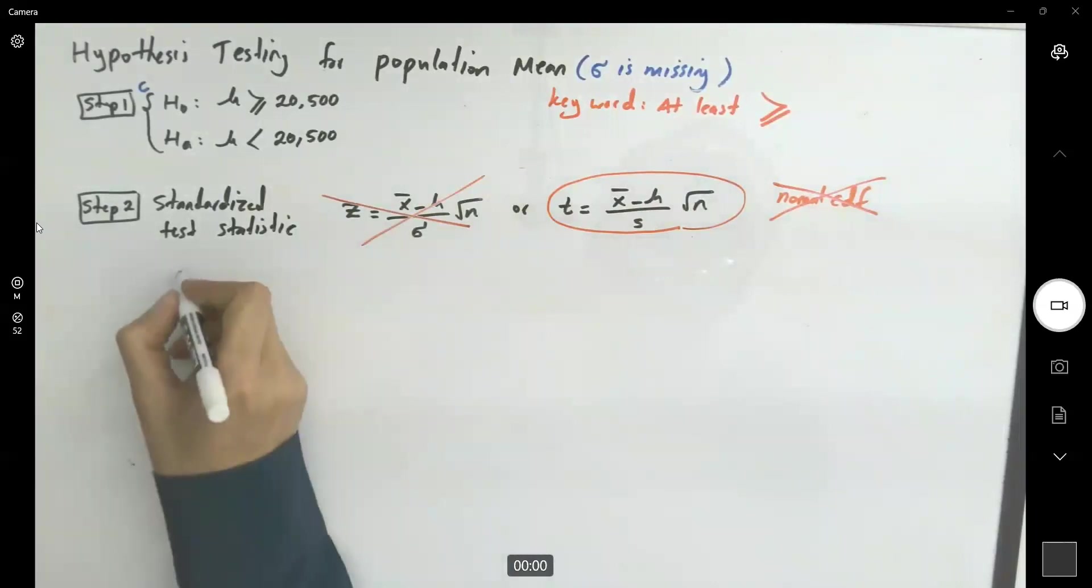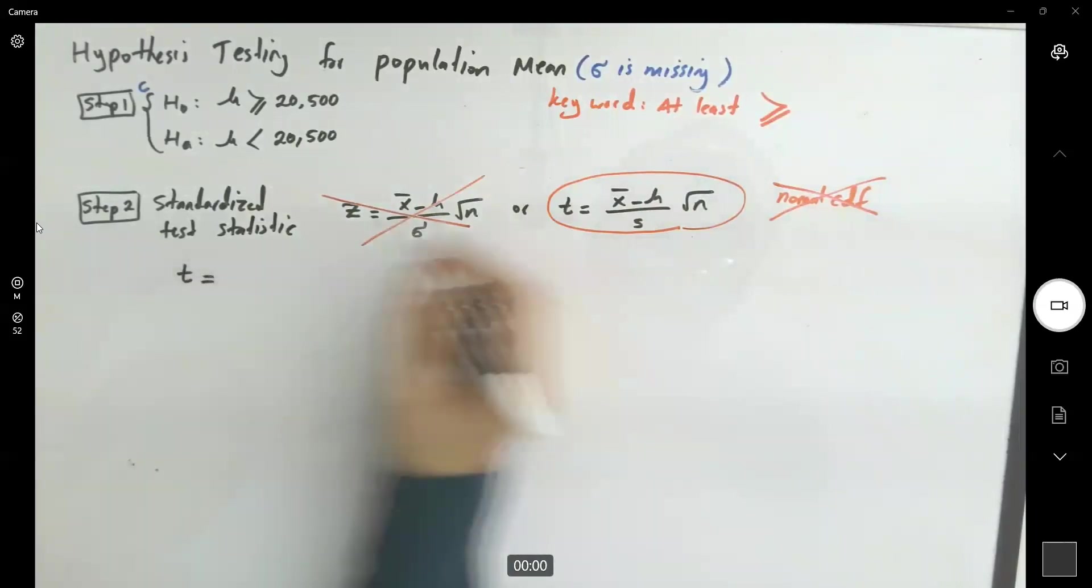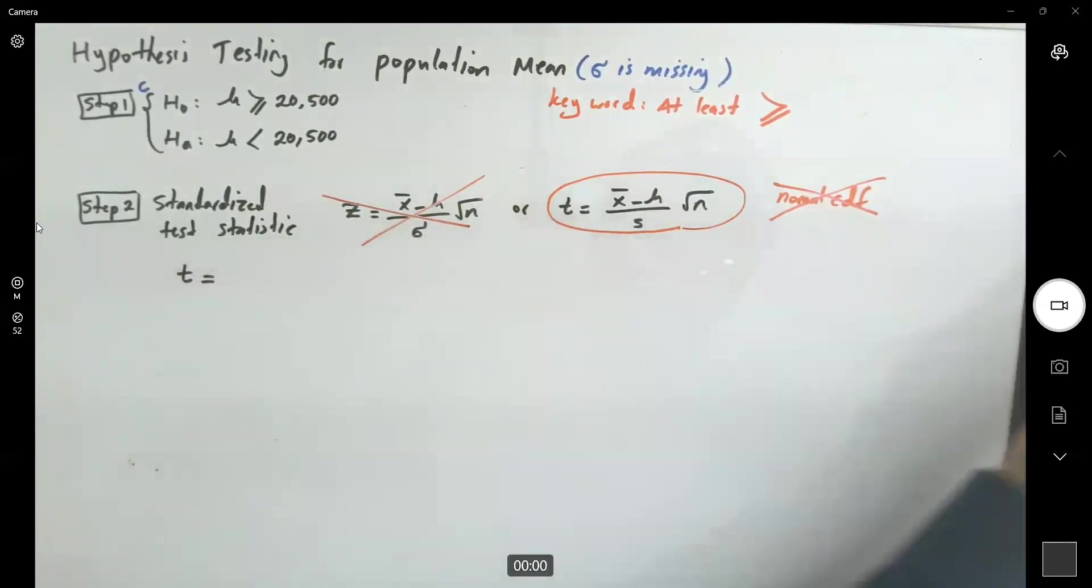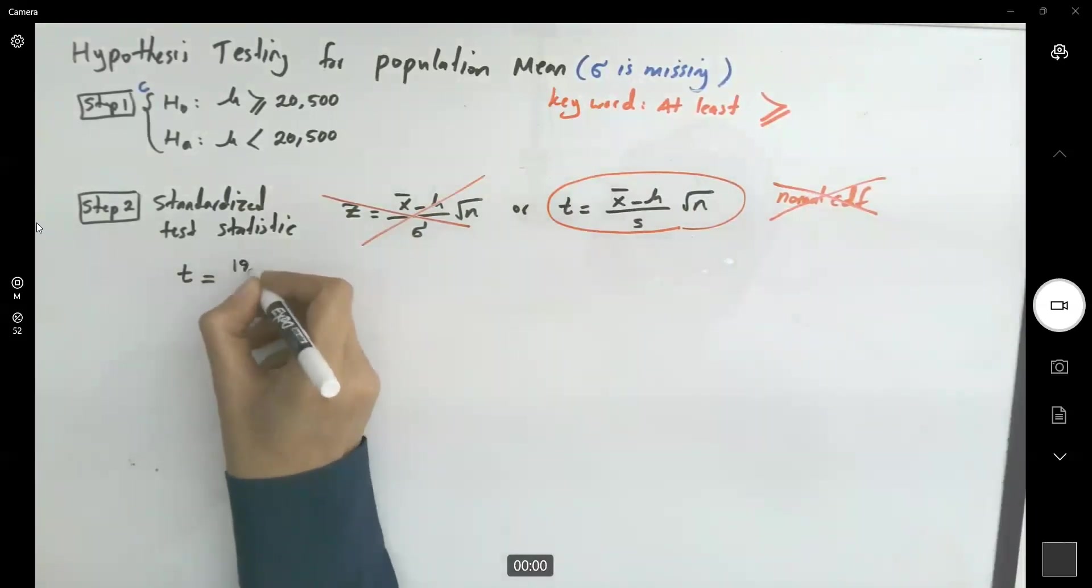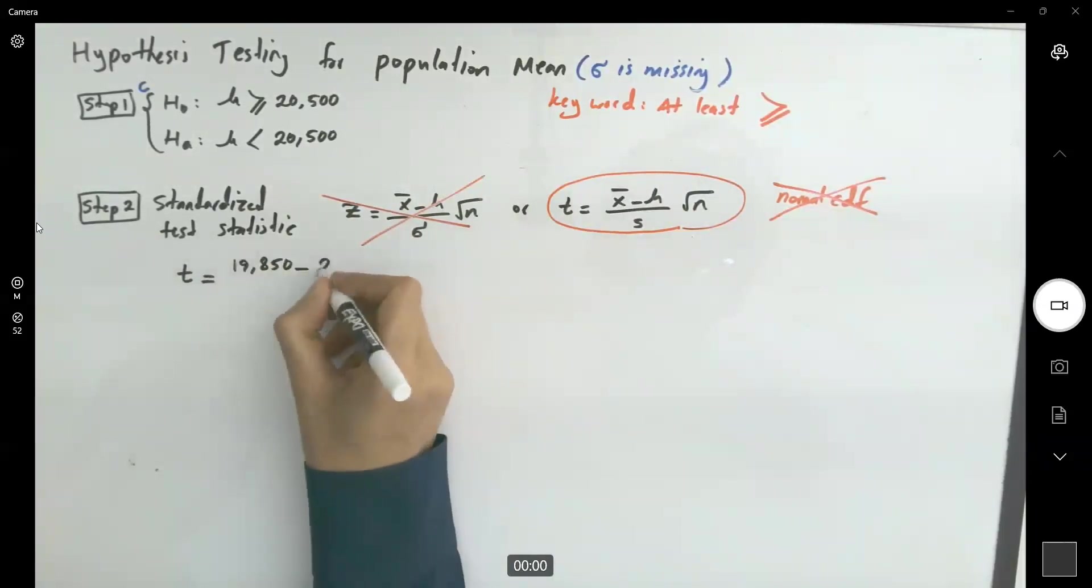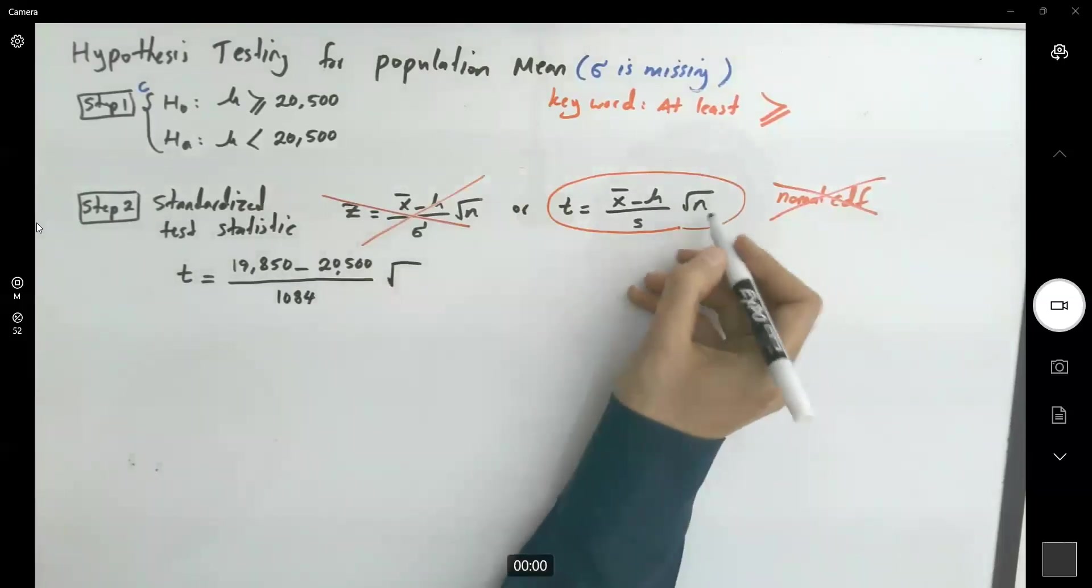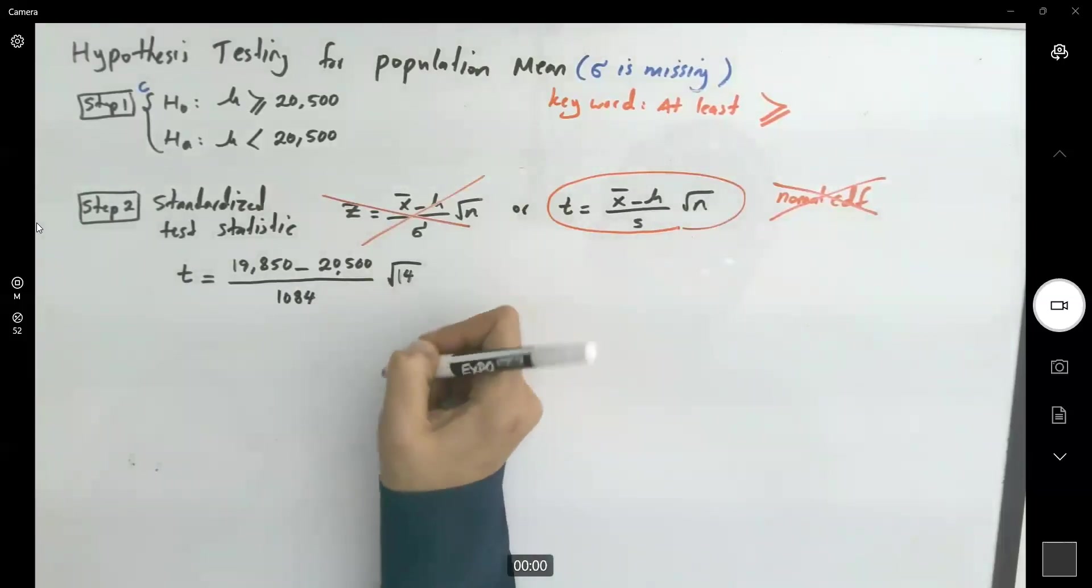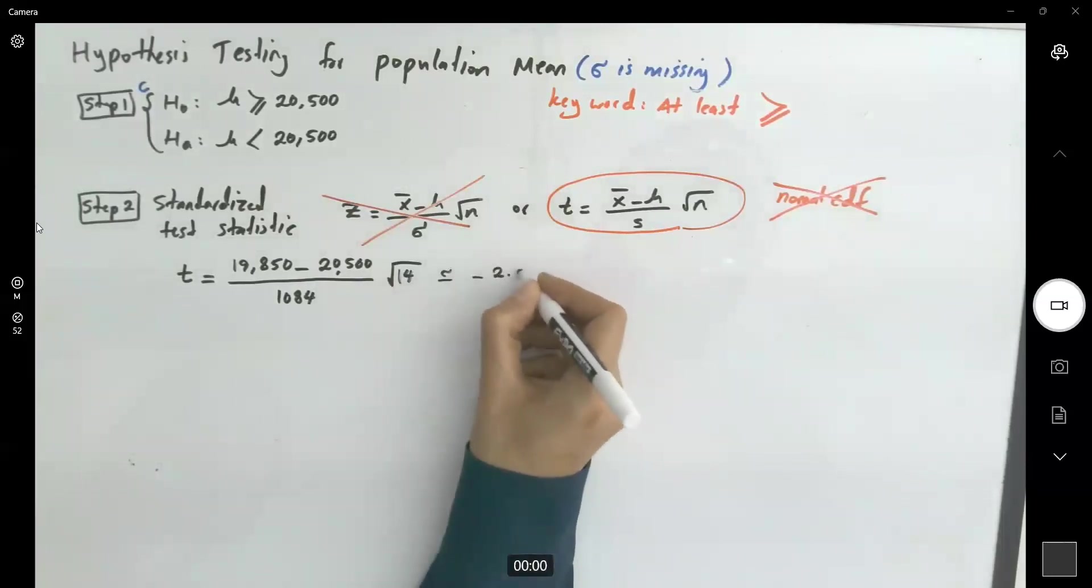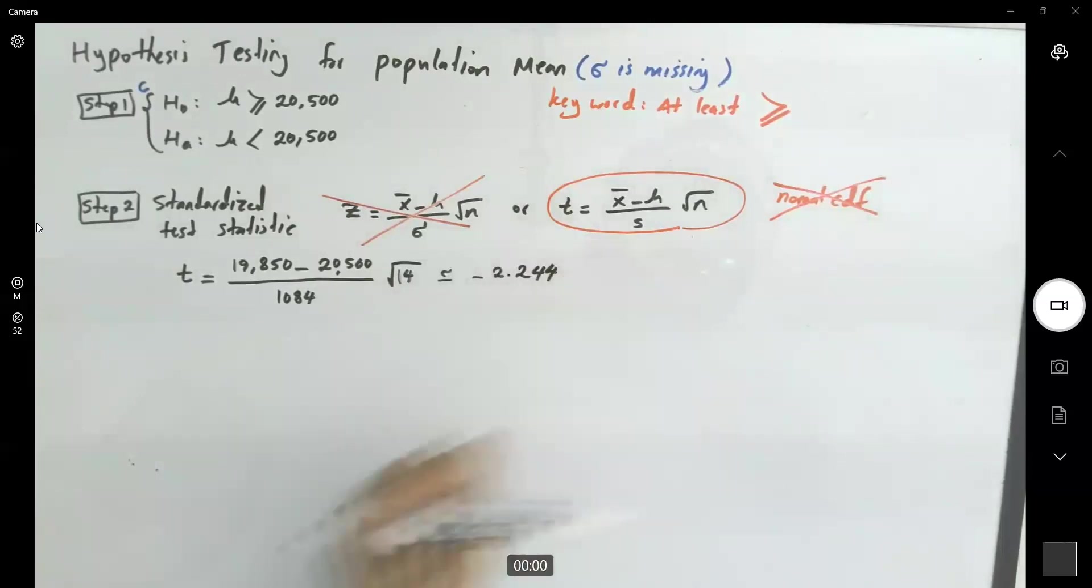So let me find t. t is going to be x bar, the mean of the sample is $19,850 minus the mean $20,500, divided by s, sample standard deviation, $1,084 times square root of n. And the sample size is 14.